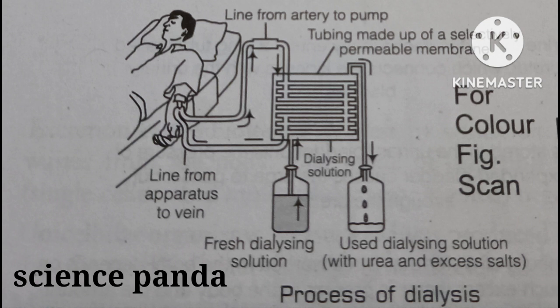The dialysis unit allows the blood to run along one side of the cellophane membrane and the dialyzing fluid in the opposite direction. This is generally done to maintain the concentration gradient between the patient's blood and the dialyzing fluid.